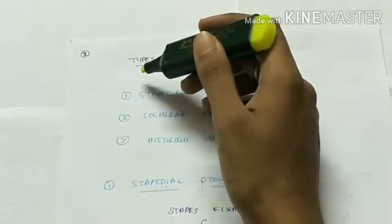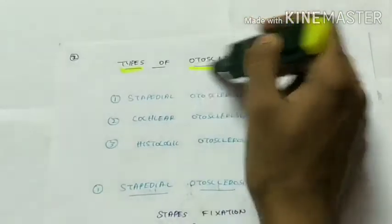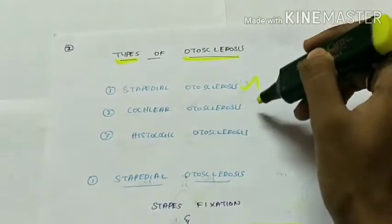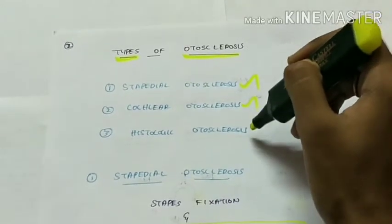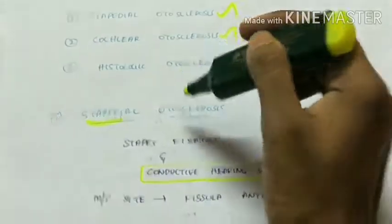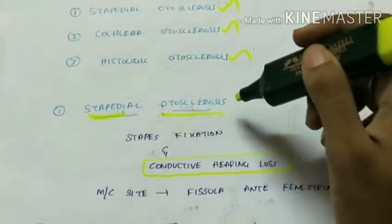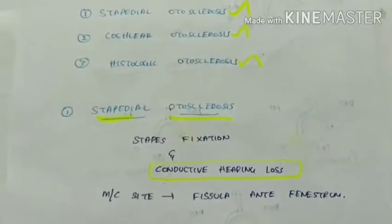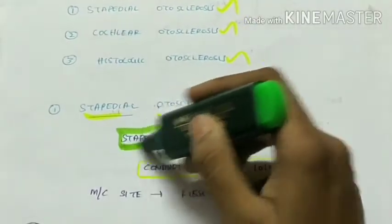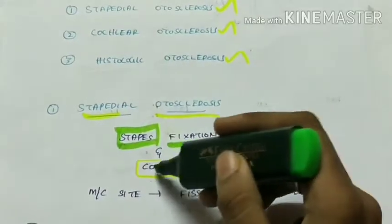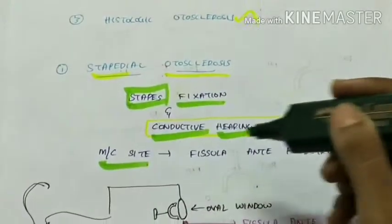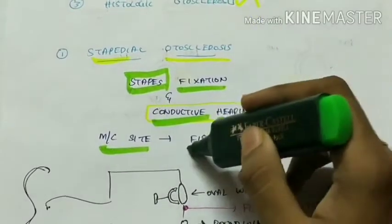There are three main types of otosclerosis: stapedial otosclerosis, cochlear otosclerosis, and histologic otosclerosis. The first type, stapedial otosclerosis, is the most common. Here there is fixation of the stapes, which is a middle ear ossicle, leading to conductive hearing loss. The most common site is the fissula ante-fenestrum, near the oval window.